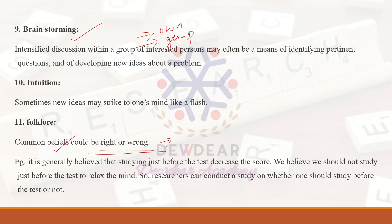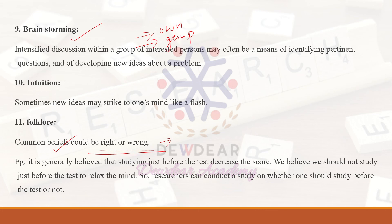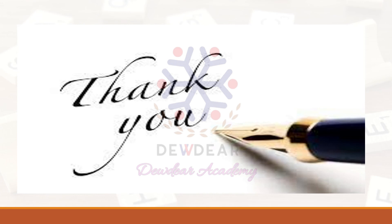In summary, the sources of research problems include personal experience, clinical experience, nursing literature, theories, previous research, social issues, interaction with peers and experts, ideas from external sources, brainstorming, intuition, and folklore. This video covered research problem, research question, and the sources of research problems. Thank you.